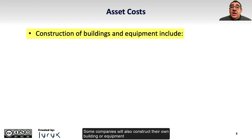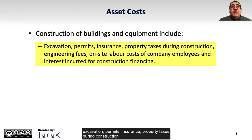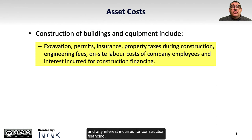Some companies will also construct their own building or equipment and incur the following types of costs, which might include excavation, permits, insurance, property taxes during construction, engineering fees, on-site labor costs of company employees, and any interest incurred for construction financing.